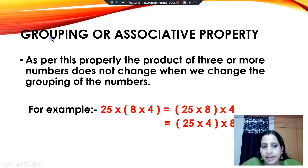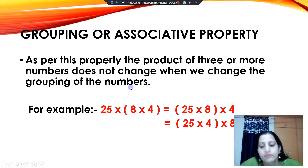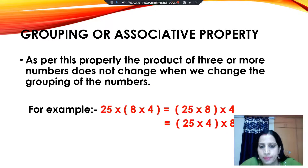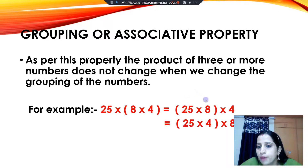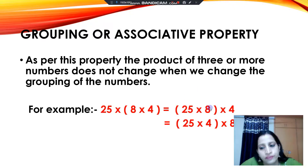Now we will discuss about the second property — that is the grouping or associative property. According to this property, the product of 3 or more numbers does not change when we change the grouping of the numbers. Whenever we are multiplying 3 or more numbers, we can make a group of any 2 numbers and in all cases our product will remain the same. For example, here 3 numbers are 25, 8, and 4.